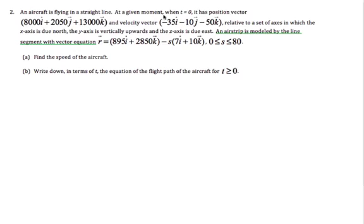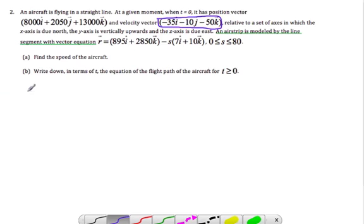And this is the velocity vector. It wants to find the speed of the aircraft. Well, the speed of the aircraft is going to come from my velocity vector, which is this one here. If I want the speed, if I call this vector v, the speed is just the magnitude of that vector.